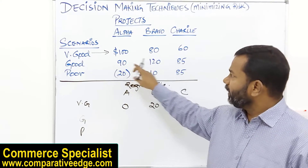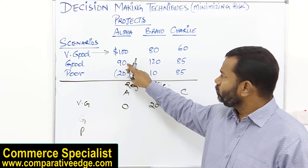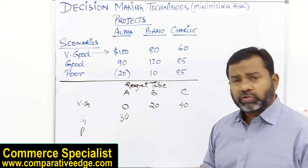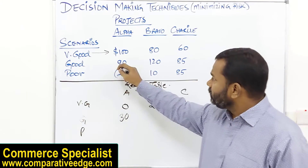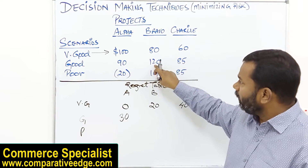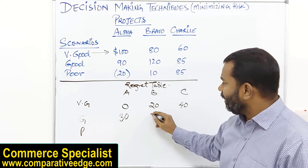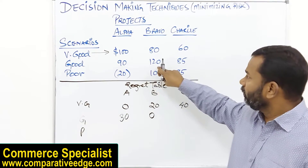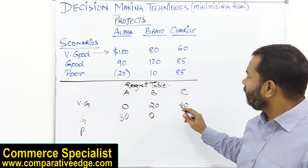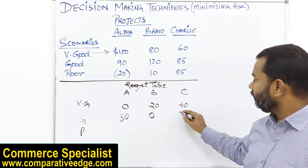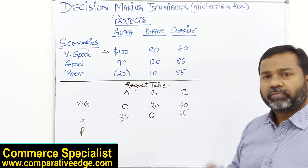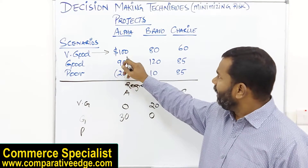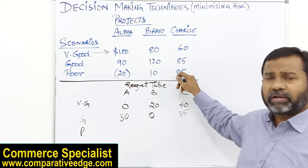In the 'Good' economy row, the maximum is $120 for Bravo. If I choose Alpha at $90, I have a regret of $30. If I choose Bravo at $120, I have no regret. If I choose Charlie at $85, I have a regret of $35.